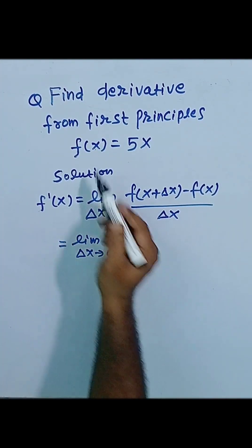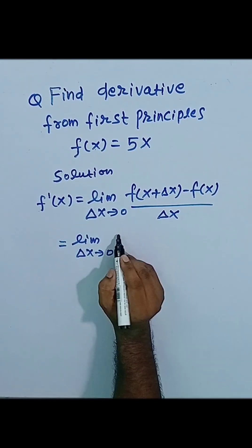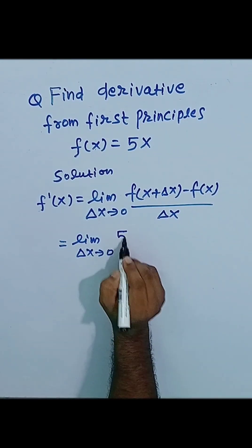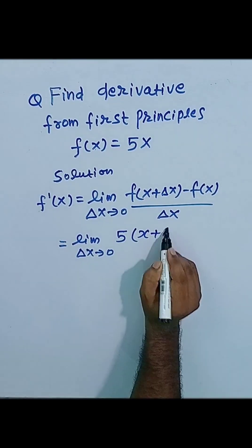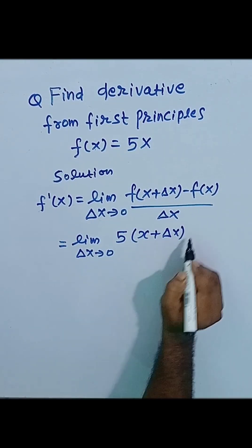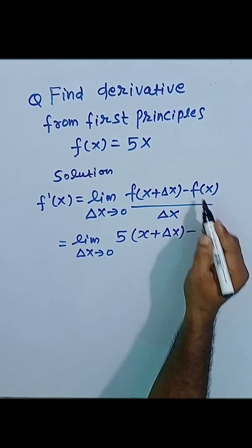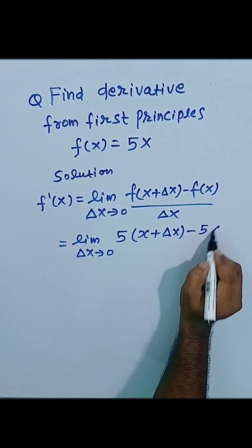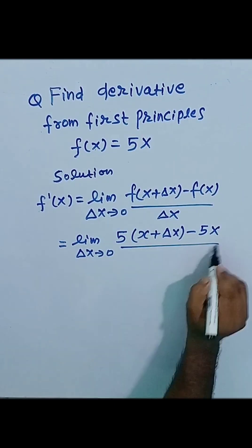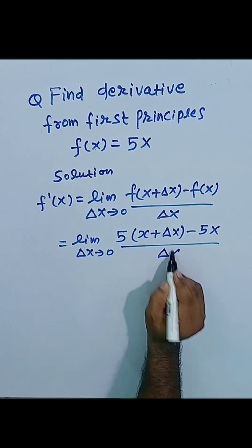By putting x plus delta x in place of x, we will get 5(x plus delta x) minus f(x), that is 5x, divided by delta x.